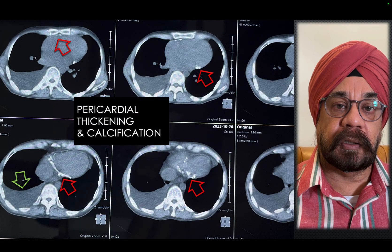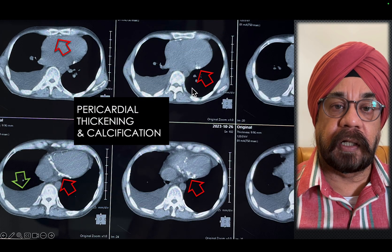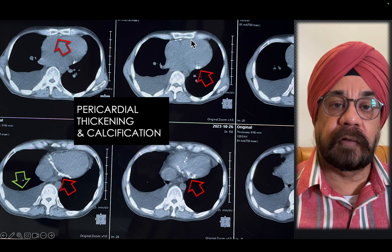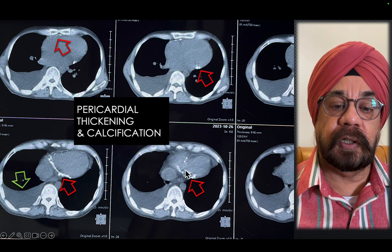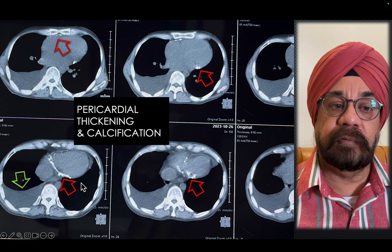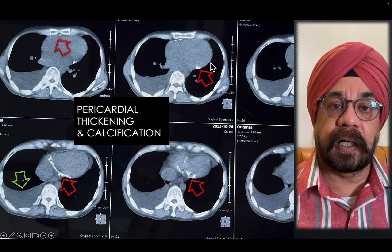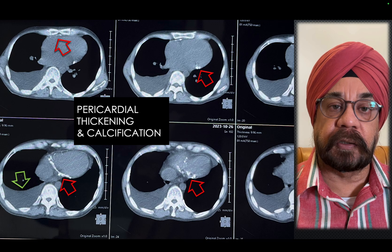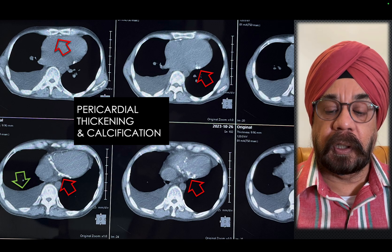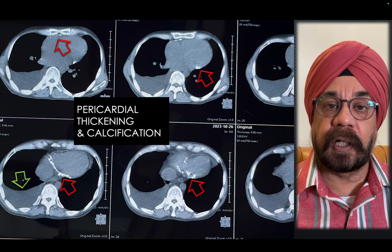A CT scan was done for pericardial thickening and calcification. You can see patchy calcification in the AV groove and anterior aspect of the pericardium, along with thickened pericardium, making the diagnosis of constrictive pericarditis and suggesting this patient for pericardiectomy.